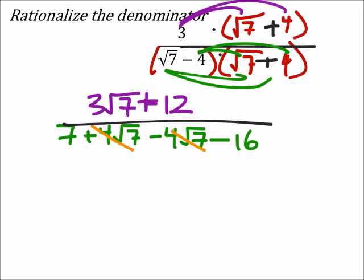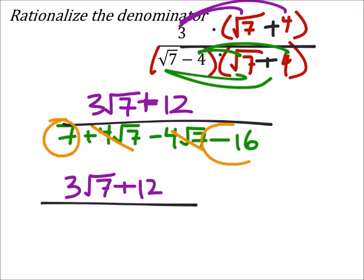Now this would simplify into 3 times the square root of 7, plus 12, all over, and I can combine these, 7 minus 16, which is a negative 9.